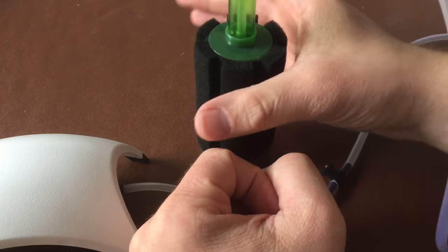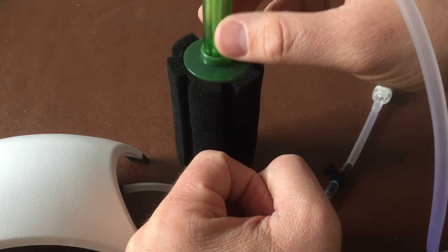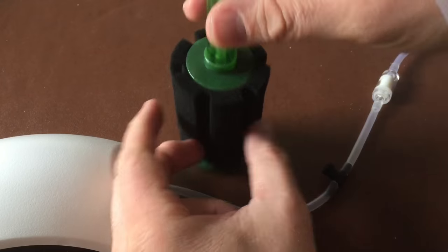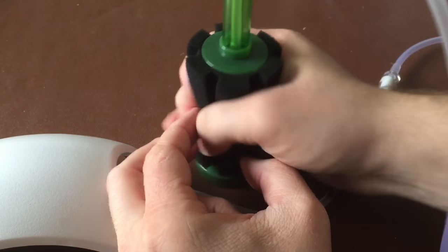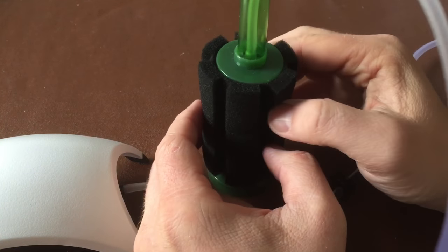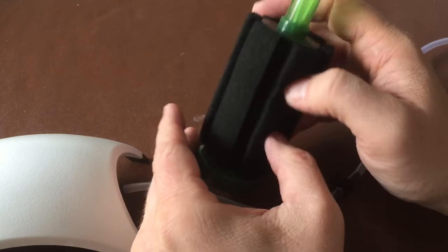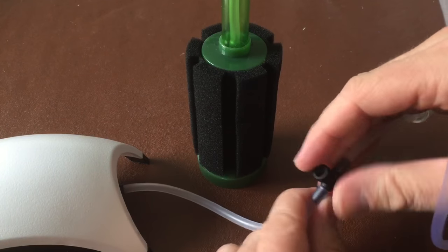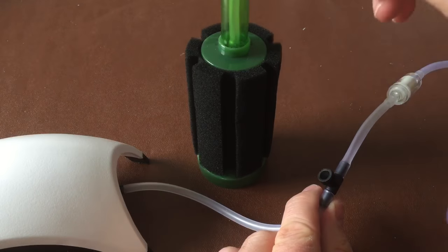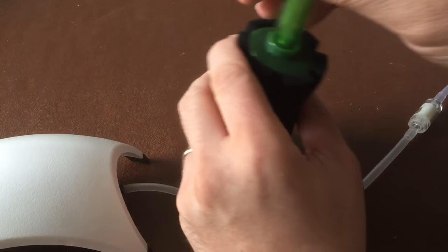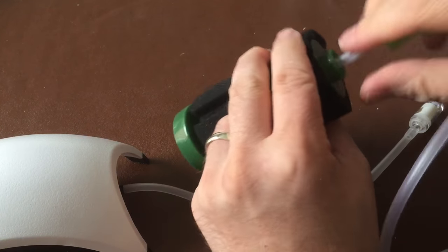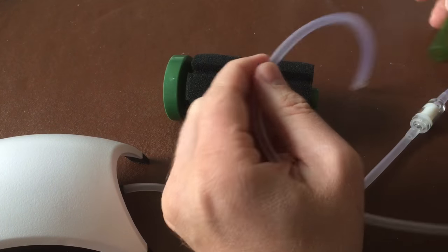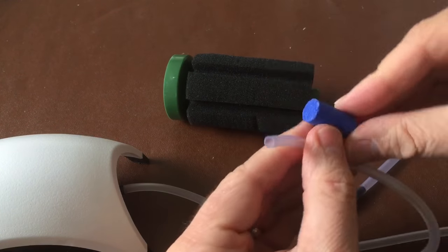So I mean that's your sponge filter connected. It'll just sit in the bottom and draw the water in through the sponge, and bubbles will come out the top here drawing the water up. And that's mechanically and biologically filtering your tank and very safe for fish fry. And you can just adjust this to adjust the flow of air through your tank.